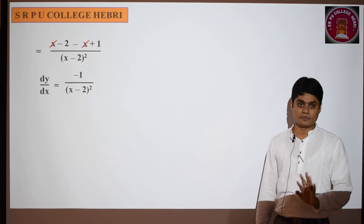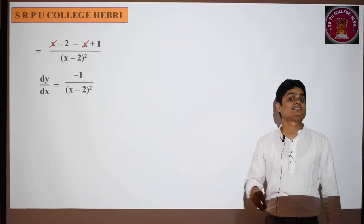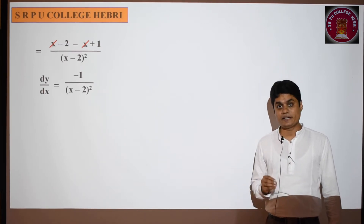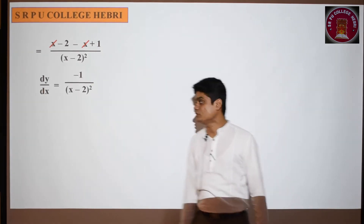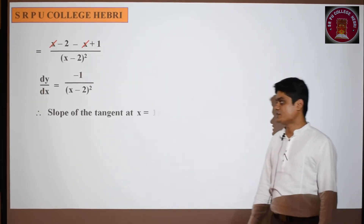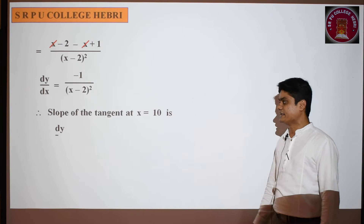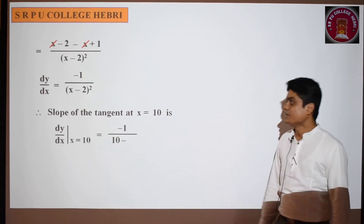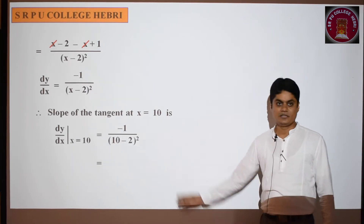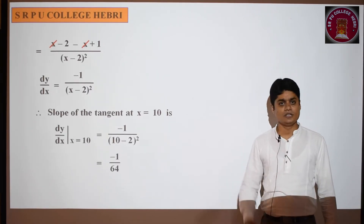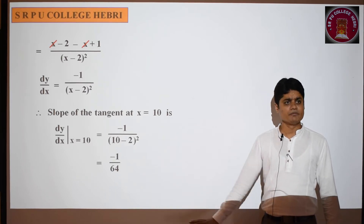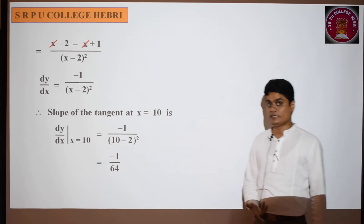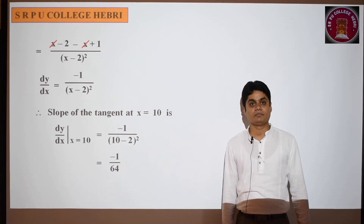Now we need dy/dx at x = 10. Substituting x = 10: slope = -1/(10 - 2)² = -1/8² = -1/64. Remember, the slope can be negative — you learned that previously. So the answer is -1/64.